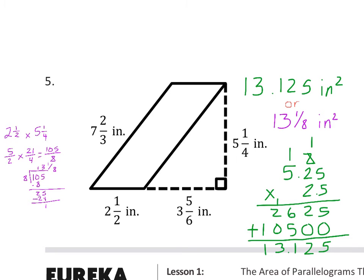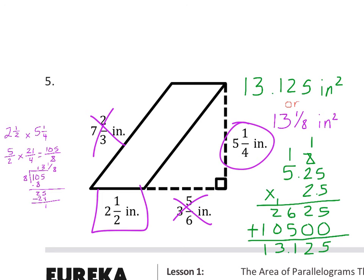Number 5 is more interesting — there are several numbers, but several we don't need. We do need the base. We don't need the horizontal offset distance; it doesn't matter where along the base we draw the height as long as it goes from top to bottom at 90 degrees — so that distance is irrelevant. We do need the height. So we multiply two and a half (base) times five and a fourth (height). As fractions: make them improper, multiply, simplify to get 13 and one eighth. As decimals: 2.5 times 5.25 equals 13.125, which equals 13 and one eighth. Either form is correct; include the label inches squared.